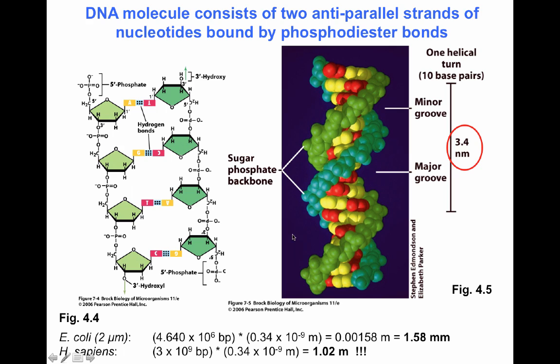If we take the E. coli genome of 4.6 million bases and multiply by 3.4 nanometers per turn, we get that the bacterial genome is only 1.5 millimeters in length. The human genome with its 3×10⁹ bases comes to about 1 meter long. Think about E. coli being 1.5 millimeters long but the microorganism itself is only 2 micrometers — 1,000 orders of magnitude smaller. Our cells at 10 micrometers contain a DNA molecule 1.02 meters in length. This is why DNA compaction is necessary.